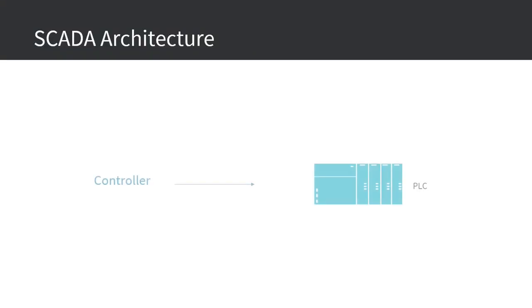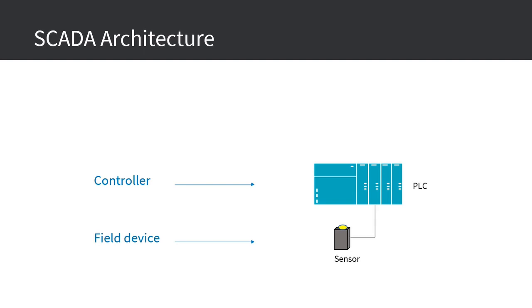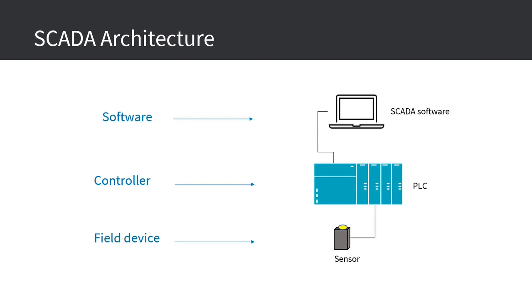The basic SCADA architecture includes a controller — for example, a programmable logic controller or PLC — then a factory field device like a sensor, for example a proximity sensor, and finally a SCADA software to collect, process, monitor, and display data.